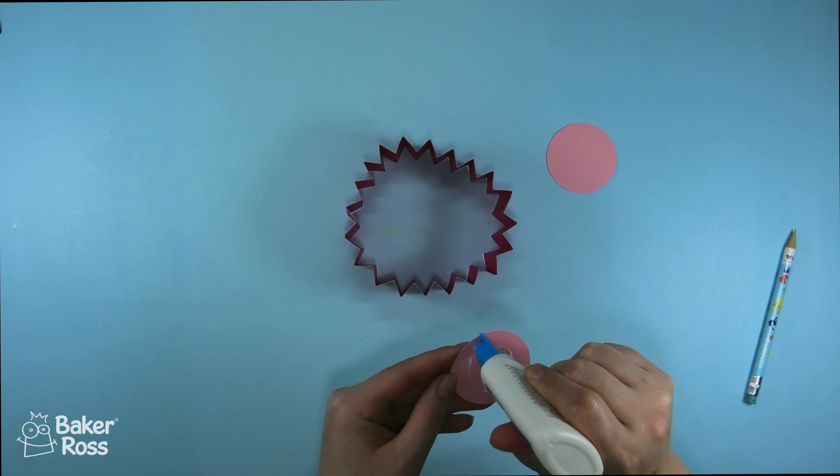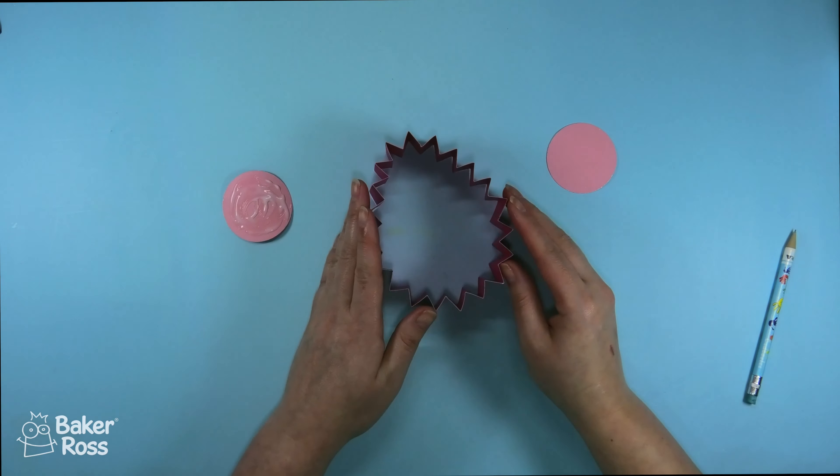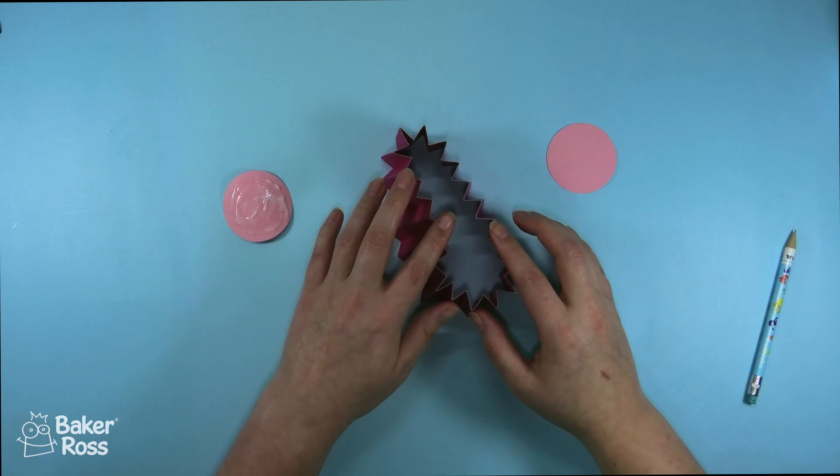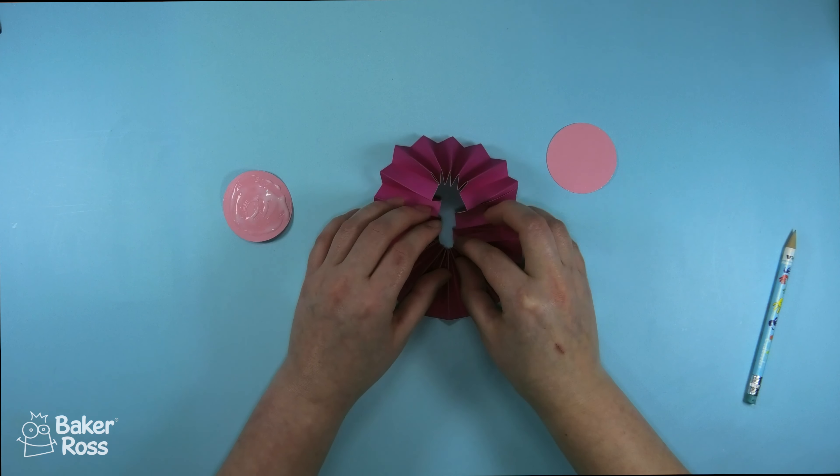You'll need a couple of circles. I decided to use a contrasting color and I used a punch to cut those out. You could just draw around something circular and carefully cut it out with some scissors and then here's the magic bit.